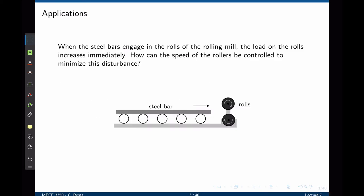Let's first consider two examples. In this example we have a rolling mill. The objective of the controller is to ensure that the rolls always turn at a constant speed. However, when a steel bar comes to the rolls and touches them, a load is applied immediately and the speed of the rolls will decrease. How can the speed be controlled to minimize this disturbance and keep the speed always constant?